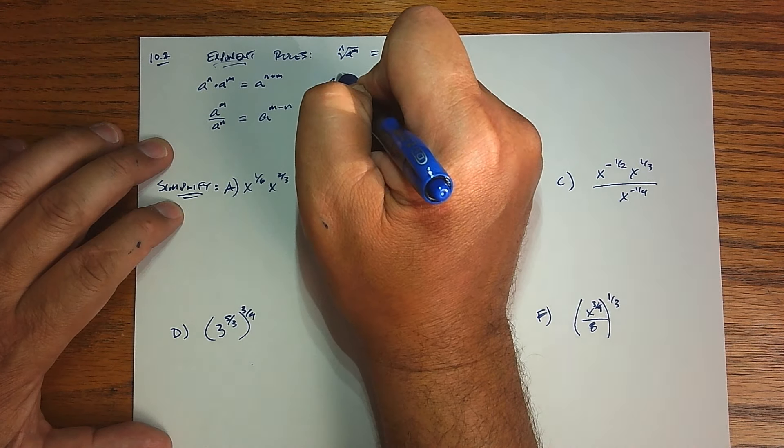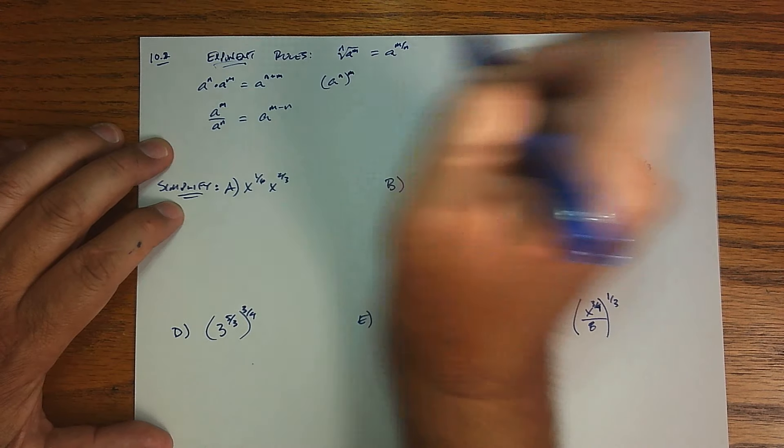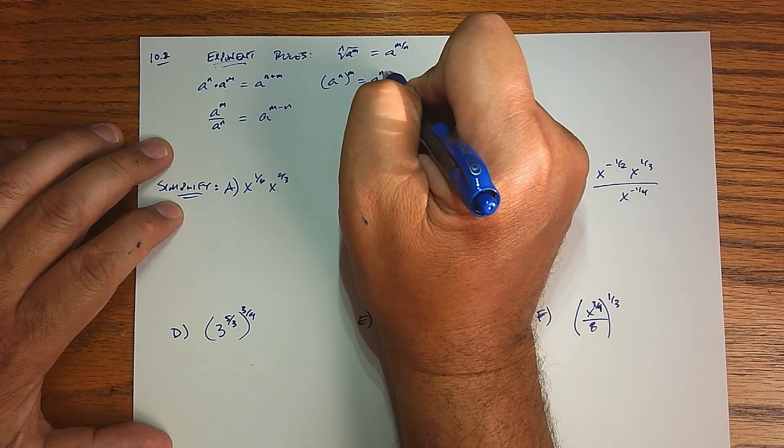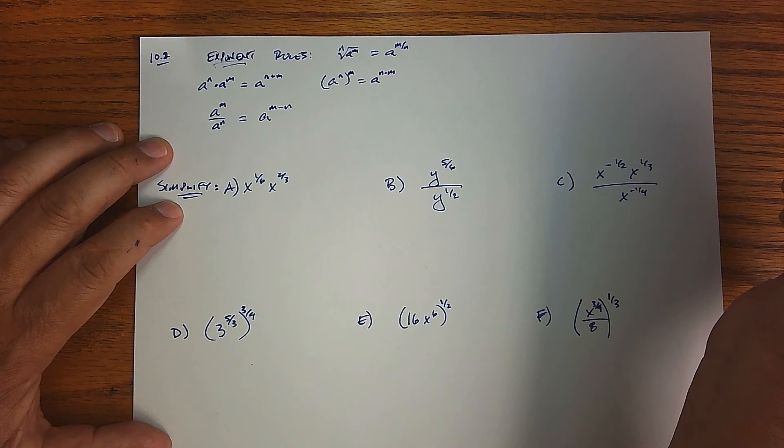Another one that we've actually seen being used is what happens when I take a power of a power, so we basically multiply my exponents together.